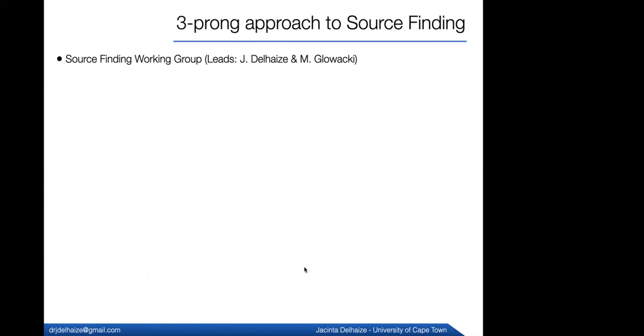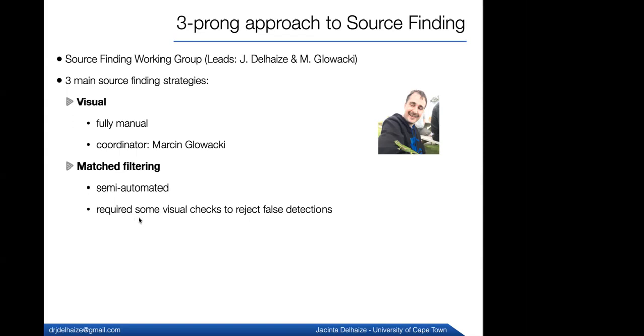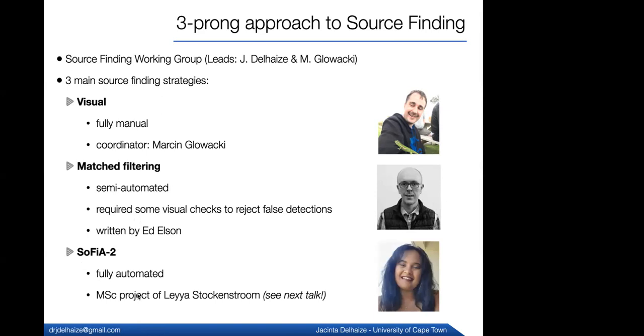All right, so then once we've got a cube, the next thing we have to do is go and find the sources in the field. So this is the work of the Source Finding Working Group, which is led by myself and also Marcin Glowacki. And we've taken three main source finding strategies. So the first is visual source finding, which is done fully manually. And this is coordinated by Marcin. Then we have this matched filtering technique with code that is semi-automated. So it kind of does some automatic source finding. We require visual checks. We have to look at each of the galaxies in order to reject false detections. This is written and performed by Ed Elson from the University of the Western Cape. And then we have SoFiA-2, which is an automated source finding code that's developed for international use. This is a master's project of Leia Stockenstrom, who's done a wonderful job of implementing SoFiA already onto LADUMA.